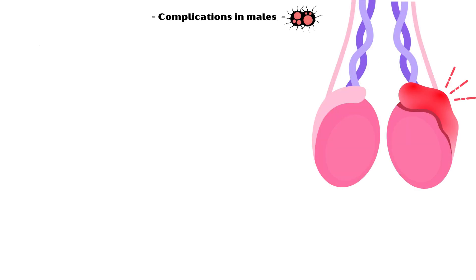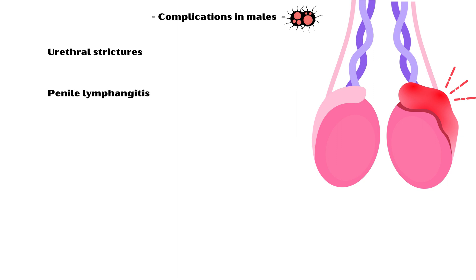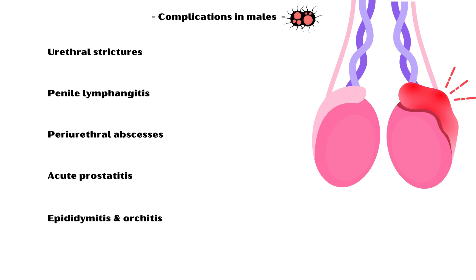Complications of gonorrhea in males include urethral strictures, penile lymphangitis, periurethral abscesses, acute prostatitis, epididymitis and orchitis, and seminal vesiculitis.